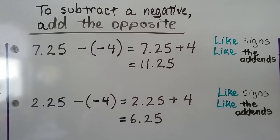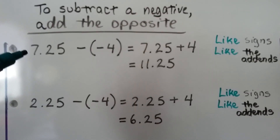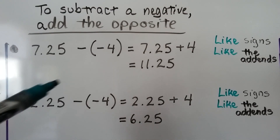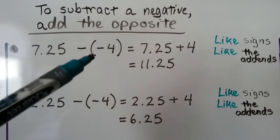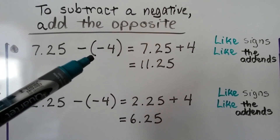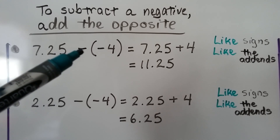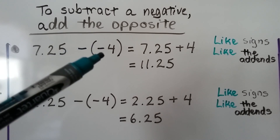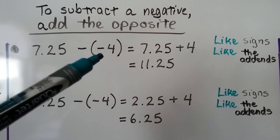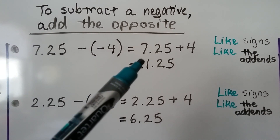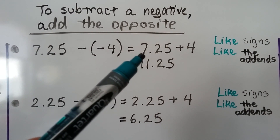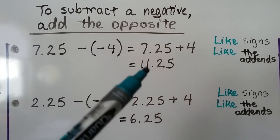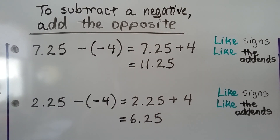So to subtract a negative, we just add the opposite. If we have 7.25 minus a negative 4, we're going to add — so that turns into a plus sign. And the opposite of a negative 4 is a positive 4. So we just have 7.25 plus 4. That's 11.25.